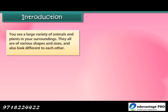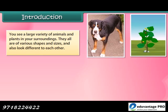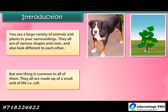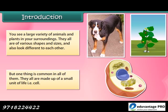You see a large variety of animals and plants in your surroundings. They all are of various shapes and sizes and also look different to each other. But one thing is common in all of them — they all are made up of a small unit of life, that is, cell. So in this module we are going to learn about cell and its structure.